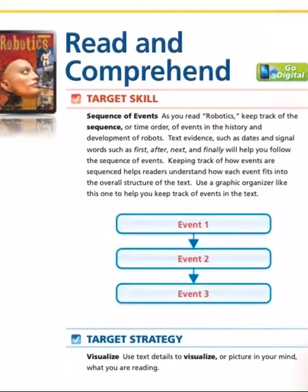Target skill: sequence of events. As you read 'Robotics,' keep track of the sequence, or time order, of events in the history and development of robots. Text evidence such as dates and signal words like 'first,' 'after,' 'next,' and 'finally' will help you follow the sequence of events. Keeping track of how events are sequenced helps readers understand how each event fits into the overall structure of the text. Use a graphic organizer to help you keep track of events.